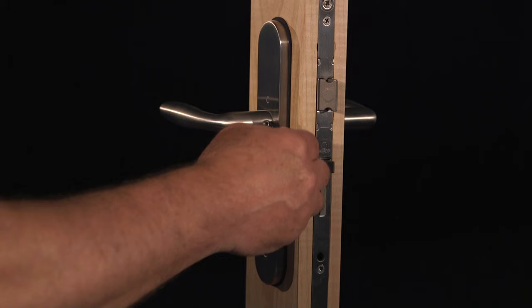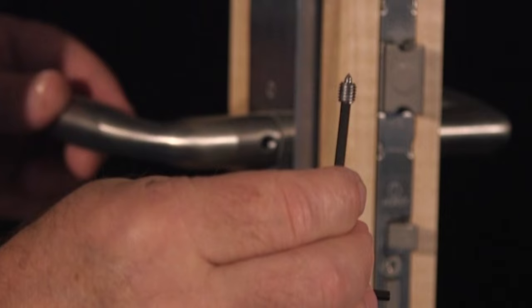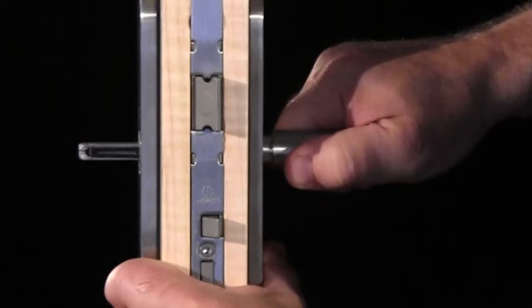Remove the handles first by unscrewing the set screw on the inside handle. Once this stainless steel set screw has been removed, remove the inside handle from the shaft and pull the outside handle and shaft out of the lock case.